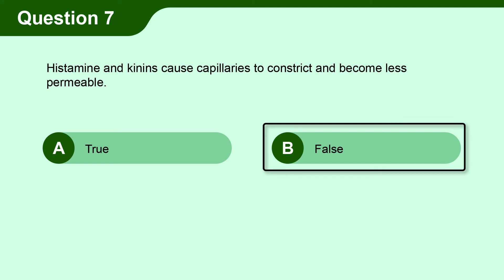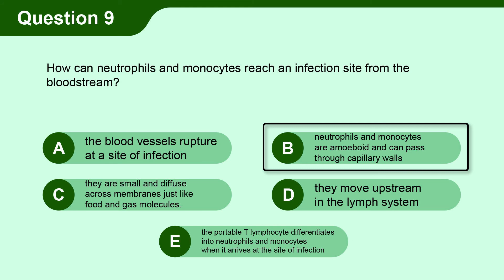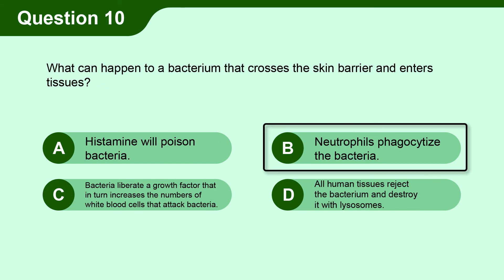Question 7. Histamine and kinins cause capillaries to constrict and become less permeable. B. False. Question 8. Any break in the skin can allow microbes to enter the body. A. True. Question 9. How can neutrophils and monocytes reach an infection site from the bloodstream? B. Neutrophils and monocytes are amoeboid and can pass through capillary walls. Question 10. What can happen to a bacterium that crosses the skin barrier and enters tissues? B. Neutrophils phagocytize the bacteria.